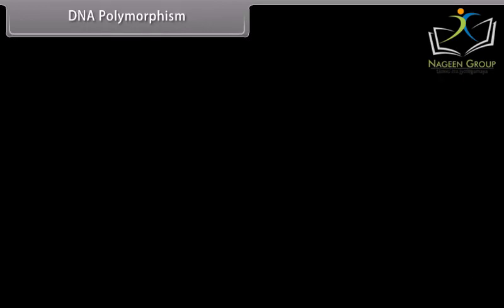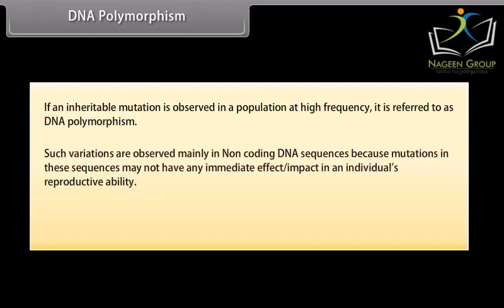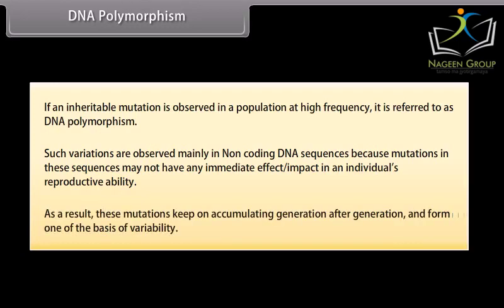If an inheritable mutation is observed in a population at high frequency, it is referred to as DNA polymorphism. Such variations are observed mainly in non-coding DNA sequences because mutations in these sequences may not have any immediate impact on an individual's reproductive ability. As a result, these mutations keep on accumulating generation after generation and form one of the bases of variability.